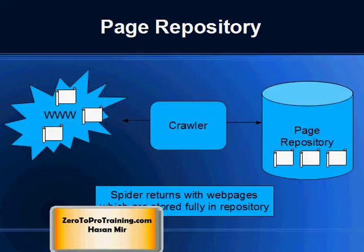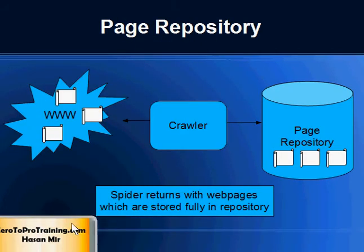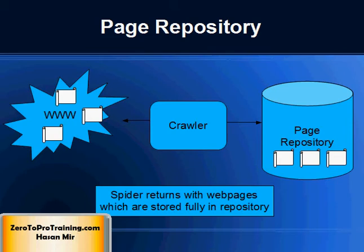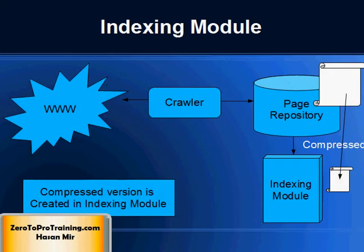The spiders return with new web pages, which are temporarily stored as full, complete web pages in the page repository. Periodically, web pages are sent from the page repository to the indexing module, where their vital information is stripped off to create a compressed version of the page. Processed pages are removed from the page repository once moved to the indexing module.